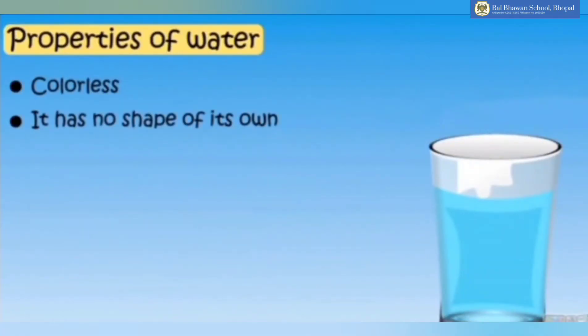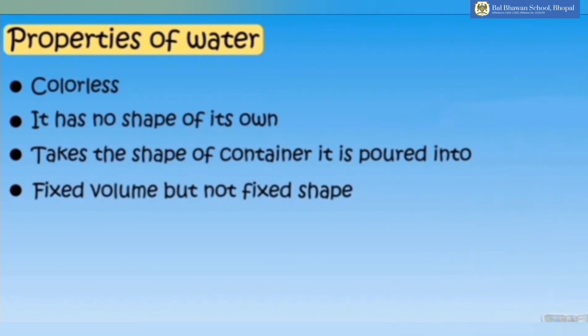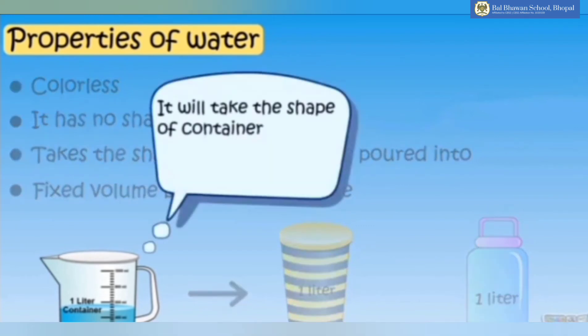Properties of water are: Water is colorless. It has no shape of its own. It takes the shape of the container it is poured into and it has a fixed volume, but not a fixed shape. Even if we change the containers, the capacity, the quantity or we call it the volume of water does not change.